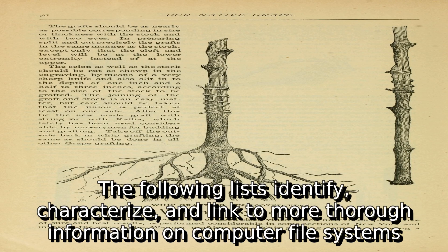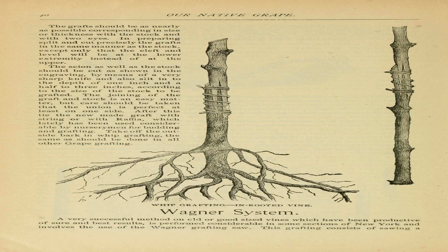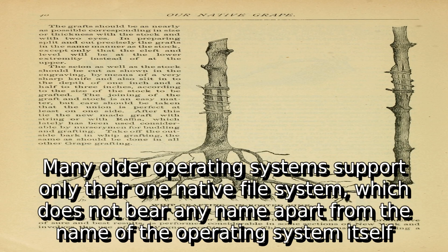The following lists identify, characterize, and link to more thorough information on computer file systems. Many older operating systems support only their one native file system, which does not bear any name apart from the name of the operating system itself.